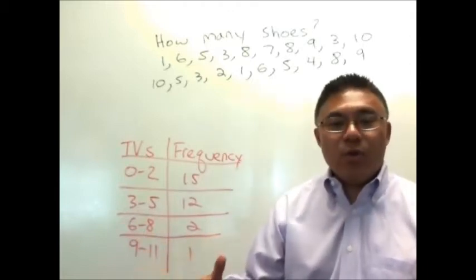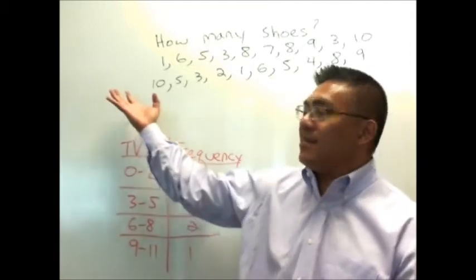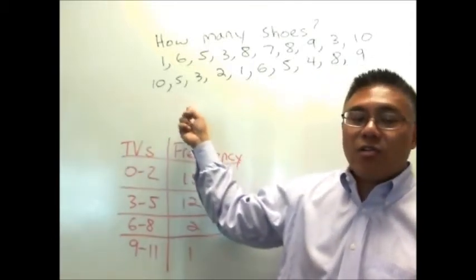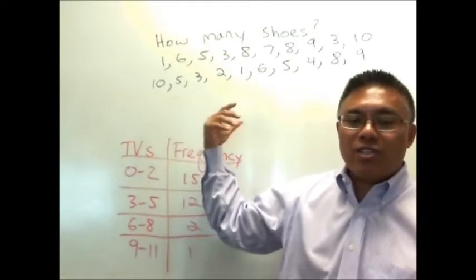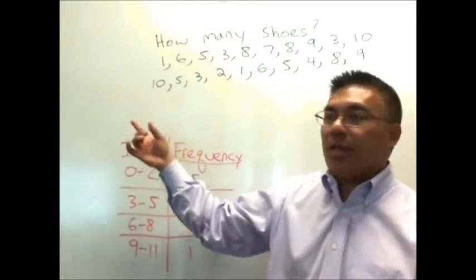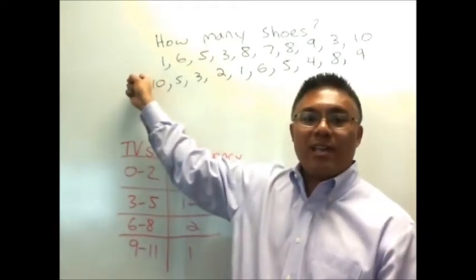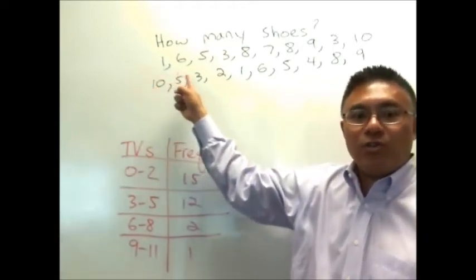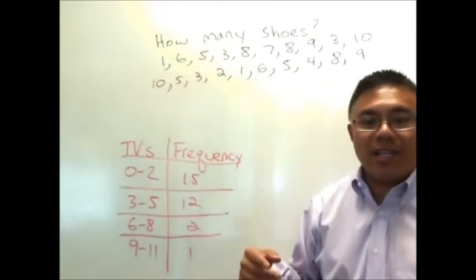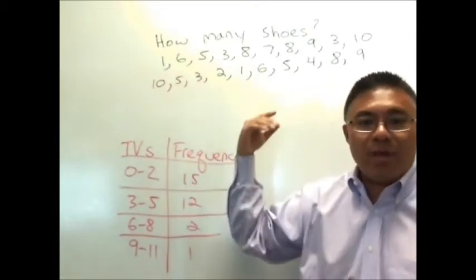But in general what we're doing is we're collecting data, right? In this case what we collected are survey information on the number of shoes people own. So we asked several people and we found out somebody said they own one pair of shoes, somebody else said they own six pairs of shoes, somebody else said they own five pairs of shoes etc. on down the line there. There should be 20 different samples.